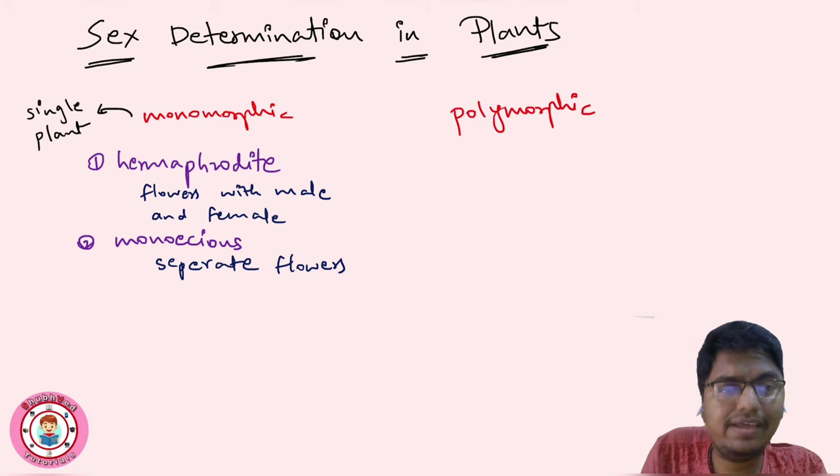So hermaphrodite is having both sexes within the flowers, and monoecious means separate male and female flowers, but in a single plant. In polymorphic, the case is different plants.